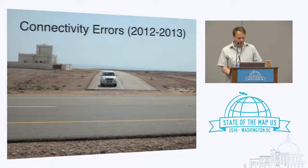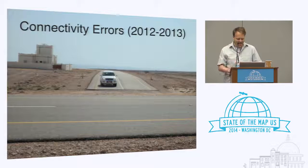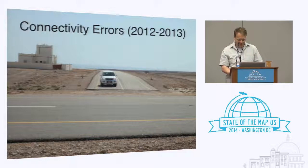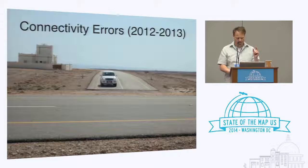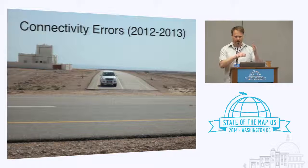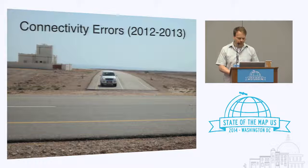Then we went on to do connectivity errors. In real life there are only a few of them, but in OpenStreetMap it turned out there were about 80,000 of them. On the map you can usually not even see them very well, but they are of course detrimental for applications using OpenStreetMap — if you want to do routing and roads are not connected, you're not going to be able to plan a route using that intersection that in real life does exist. We repaired all of those in about six weeks — that's roughly 70,000 in six weeks, which was much better than I expected based on previous experience.